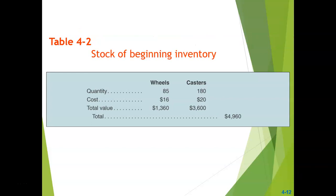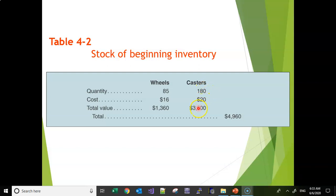We also have beginning inventory: eighty-five wheels and one hundred and eighty casters, with unit costs of sixteen dollars and twenty dollars respectively. The total inventory value comes to four thousand nine hundred and sixty dollars.